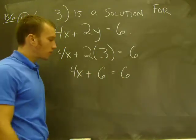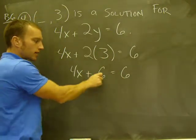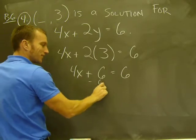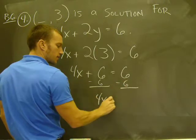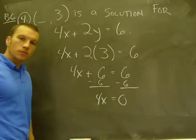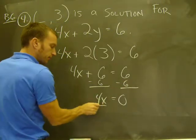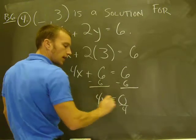Then I follow the algebra process from here, trying to get x by itself, so I subtract 6 from both sides. 6 minus 6 is 0, and 4x equals 0 means that x is 0.